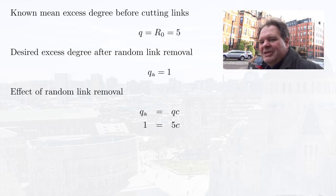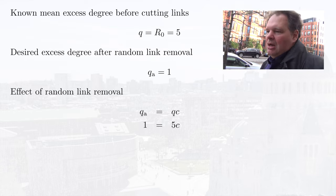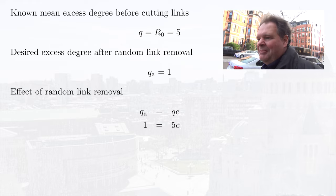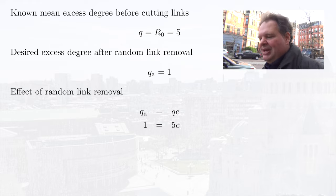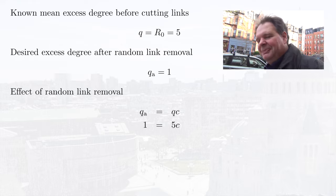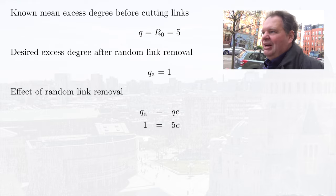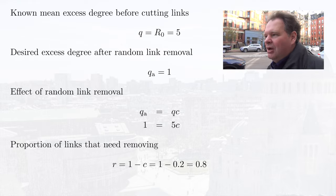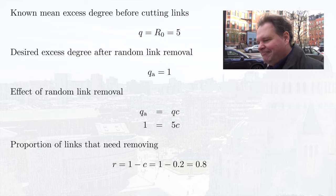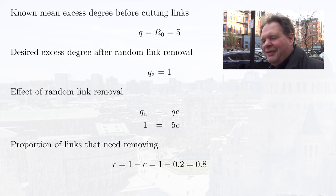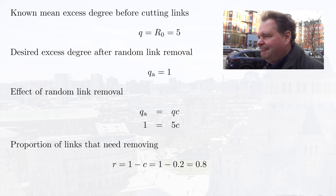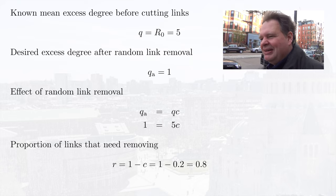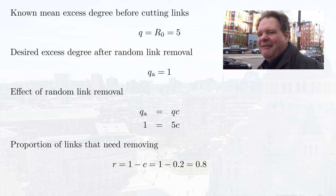We know the mean excess degree is 5, so we need to reduce it by a factor of 5. Since cutting links reduces the mean excess degree proportionally, we would have to cut 80% of the links at random to stop this disease from spreading. That's quite a lot of distancing. Maybe we can do better if we remove nodes instead — say, by vaccinating people.